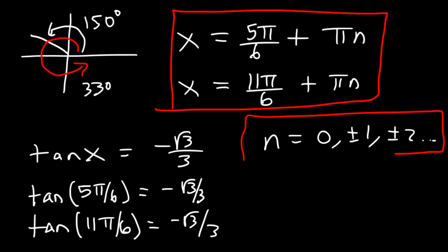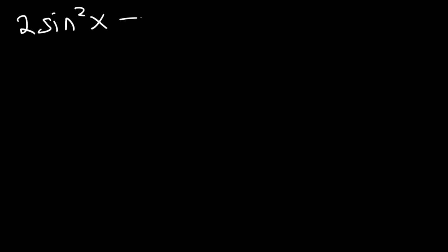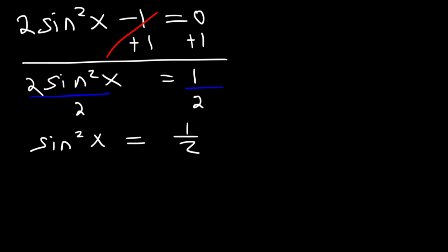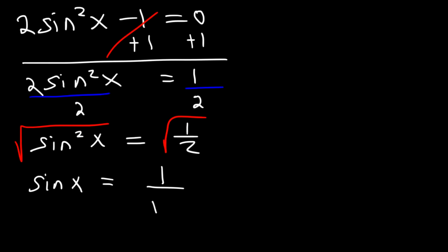Make sure to include a statement defining n. Here's another problem: 2 sine squared x minus 1 equals 0. Find all solutions. First, add 1 to both sides: 2 sine squared x = 1. Then divide both sides by 2: sine squared x = 1/2. Now take the square root of both sides. The square root of sine squared x is simply sine x. The square root of 1/2 is 1 over √2.